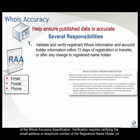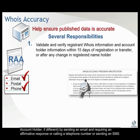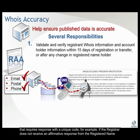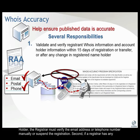Verification requires verifying the email address or telephone number of the registered name holder or account holder, if different, by sending an email and requiring an affirmative response, or calling a telephone number or sending an SMS that requires a response with a unique code, for example. If the registrar does not receive an affirmative response, the registrar must verify the email address or telephone number manually or suspend the registration.